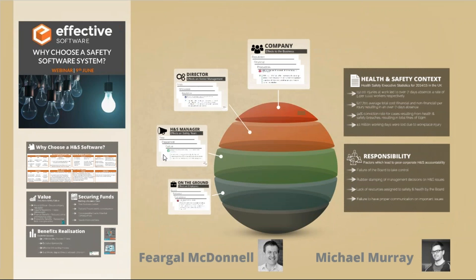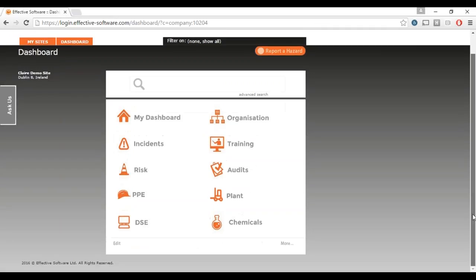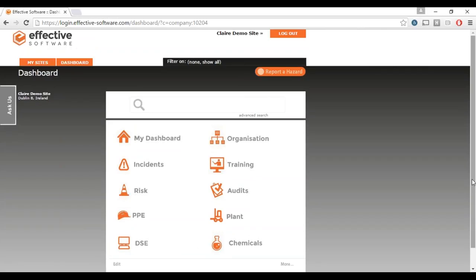That's really the context of why to choose a safety software system. I'd like to hand over to Michael for the demo. My name is Michael and I'm a customer success manager here at Effective Software. What I'm going to do now is bring up my screen — you'll be able to see my screen and I'm logged on to a demo environment. Every one of our clients is assigned a customer success or account manager, and it's really our goal to ensure that every one of our clients can use the system as well as we can. Throughout the lifecycle, we're always expanding within an organization, and we're always on hand to give you a helping hand with new areas.